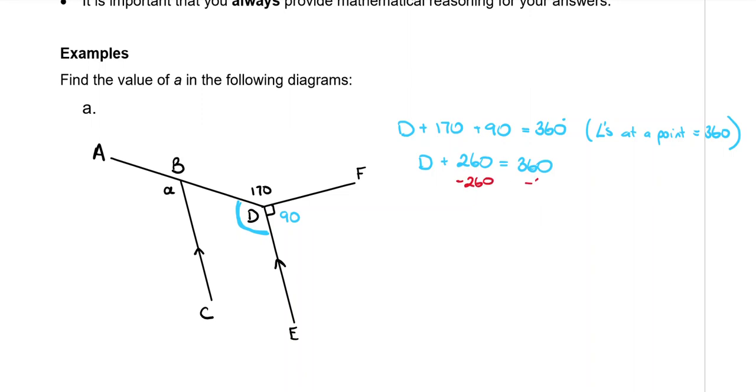Then, I just have the one number, the 260, which I am going to subtract from both sides, to find that D is equal to 100 degrees. So, I am going to put that over here in my diagram. That's 100 degrees for that angle there.